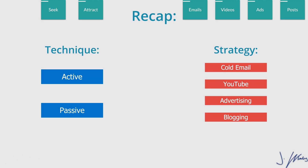That covers our four different strategies for the two different techniques: cold emailing and advertising on the active side, and YouTube content marketing and blog/text content marketing on the attract side. Regardless of which one you choose, it's important to focus on one and become the expert at it. All of them work — no technique or strategy is inferior to another. It's based on your business and the type of person you are, so choose one that aligns with what you're good at.